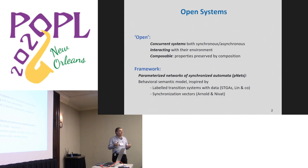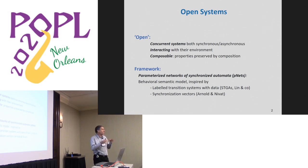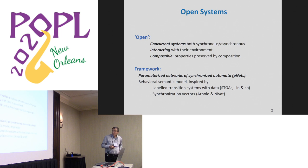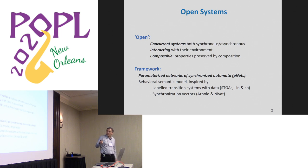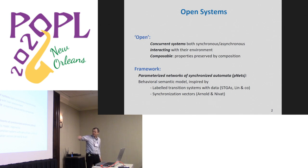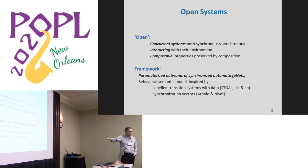We want those objects to be composable in the sense that properties we prove about one open system can be composed and preserved by composition. The framework we've been developing for a number of years is called Parametrized Networks of Synchronized Automata — with the very bad abbreviation PNETs that everybody confuses with Petri Nets. It's nothing to do with Petri Nets.